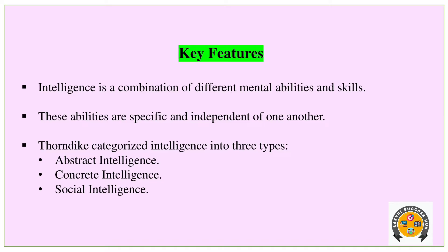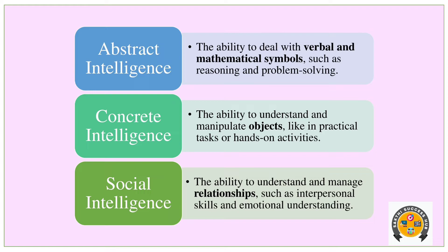There are three types of intelligence: Abstract Intelligence, Concrete Intelligence, and Social Intelligence. First, Abstract Intelligence. This concept deals with verbal and mathematical symbols, such as reasoning, problem solving, and abstract thinking.